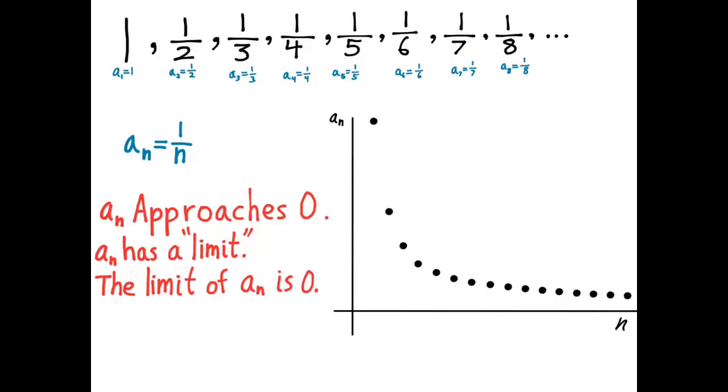What do we mean by this? We don't just simply mean that these numbers are getting closer and closer to 0, because they're also getting closer and closer to negative 1. We mean something more specific, and that's what we're going to talk about in this video.